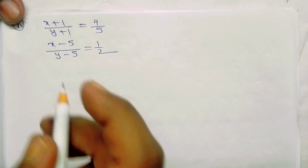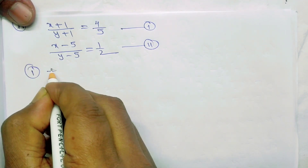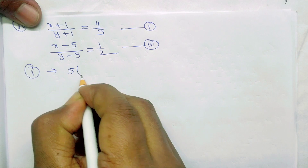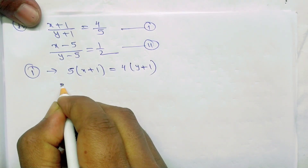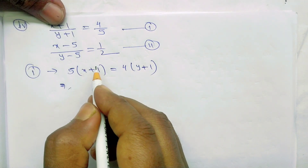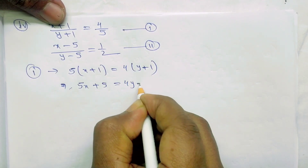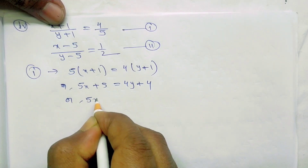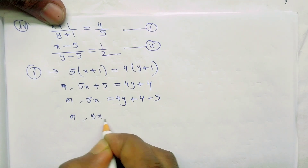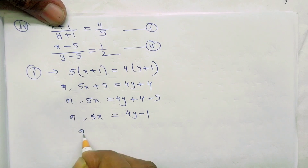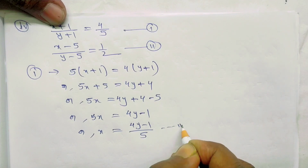Now look at equation 4. Now from equation 2: 5 into x plus 1 equals 4 into y plus 1. So that gives us 5x plus 5 equals 4y plus 4. So 5x equals 4y plus 4 minus 5. So 5x equals 4y minus 1. So x equals 4y minus 1 by 5. This is equation number 3.